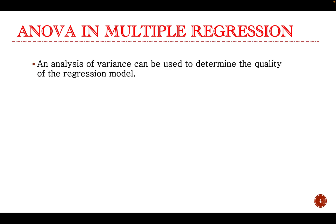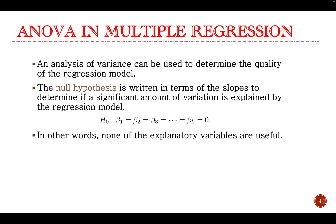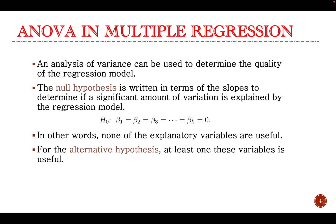An analysis of variance can be used to determine the quality of the regression model. The null hypothesis is written in terms of the slopes to determine if a significant amount of variation is explained by the regression model — in other words, none of the explanatory variables are useful. For the alternative hypothesis, at least one of these variables is useful.